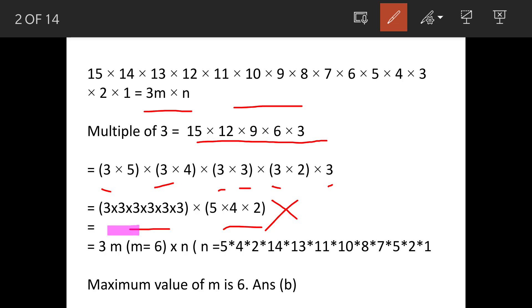Here m is 6, and n is the remaining numbers—that is, these numbers 5, 4, 2, and then the balance numbers from here.